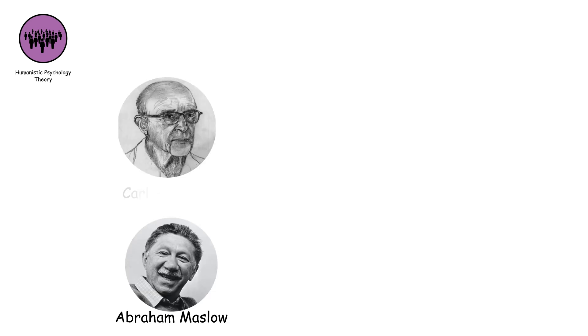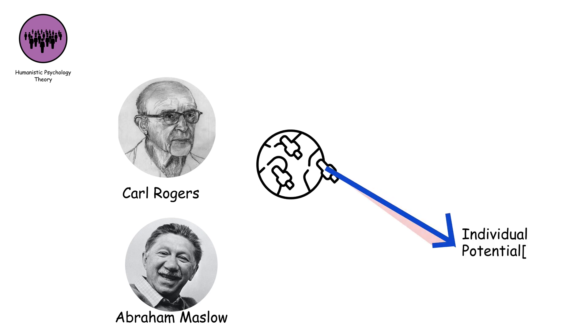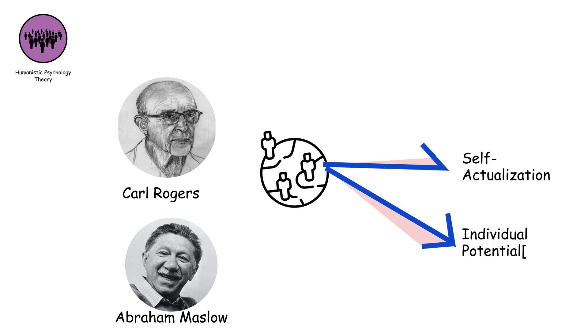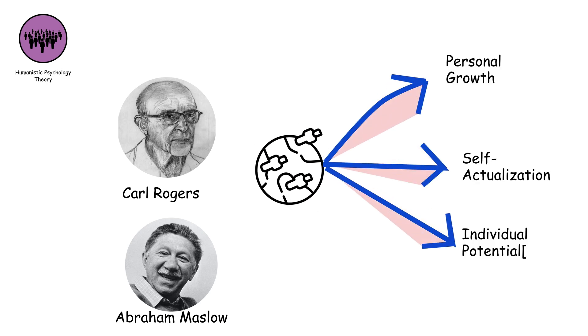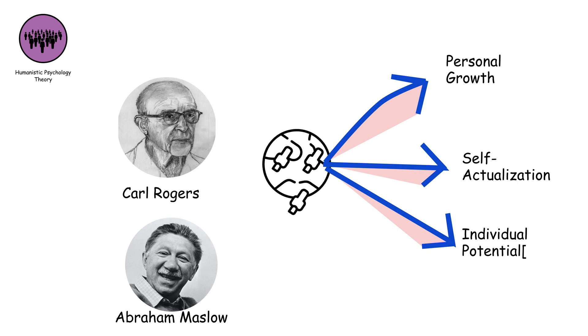Humanistic psychology theory, spearheaded by Carl Rogers and Abraham Maslow, emphasizes individual potential, self-actualization, and personal growth. It emphasizes the importance of subjective experiences and personal choices in shaping behavior.